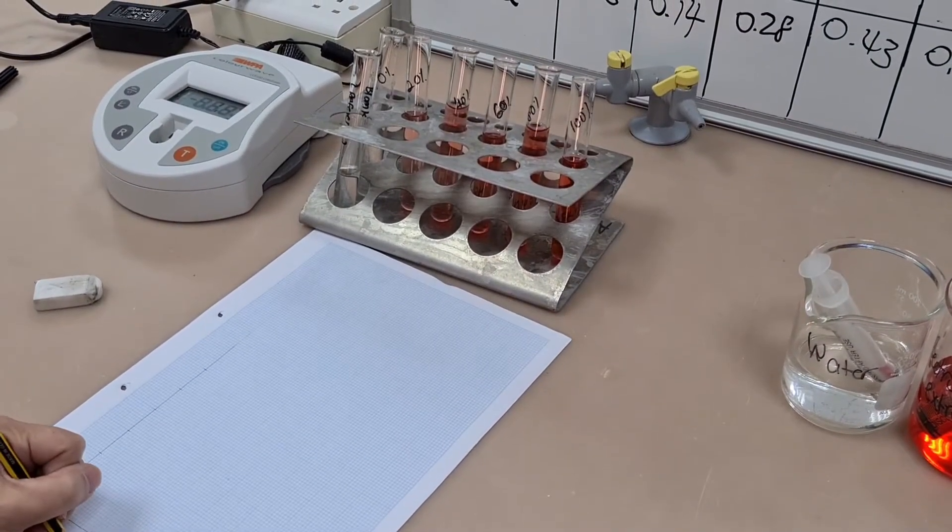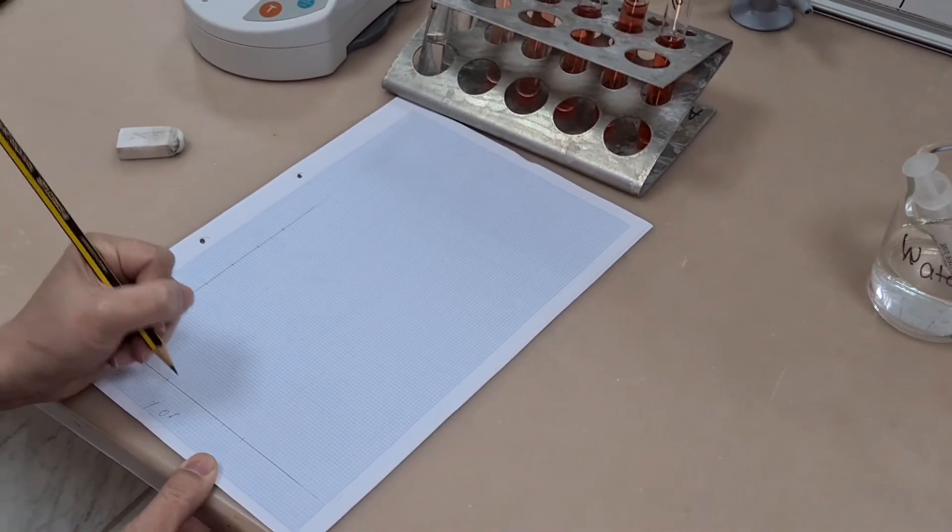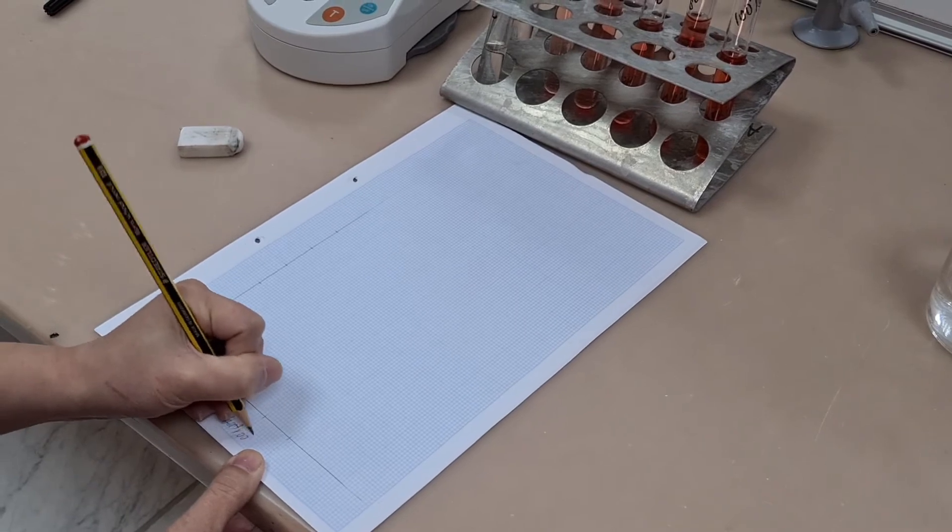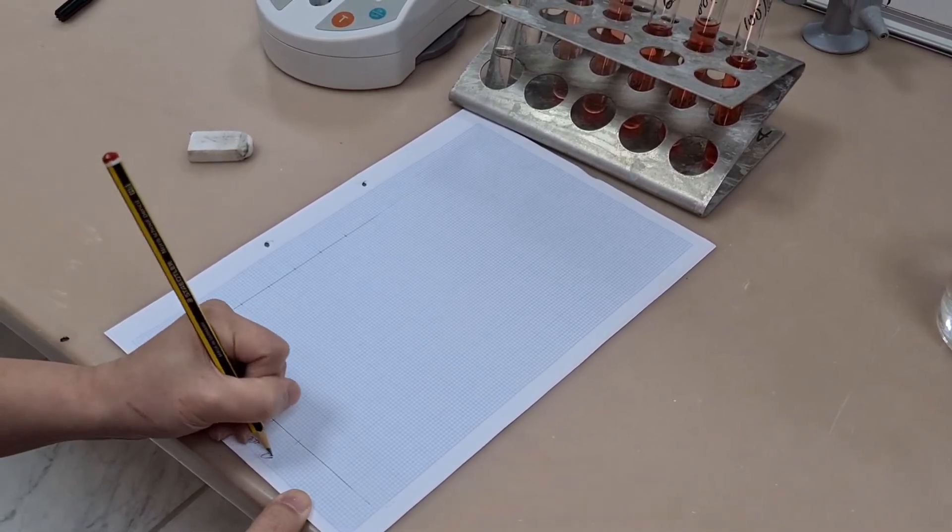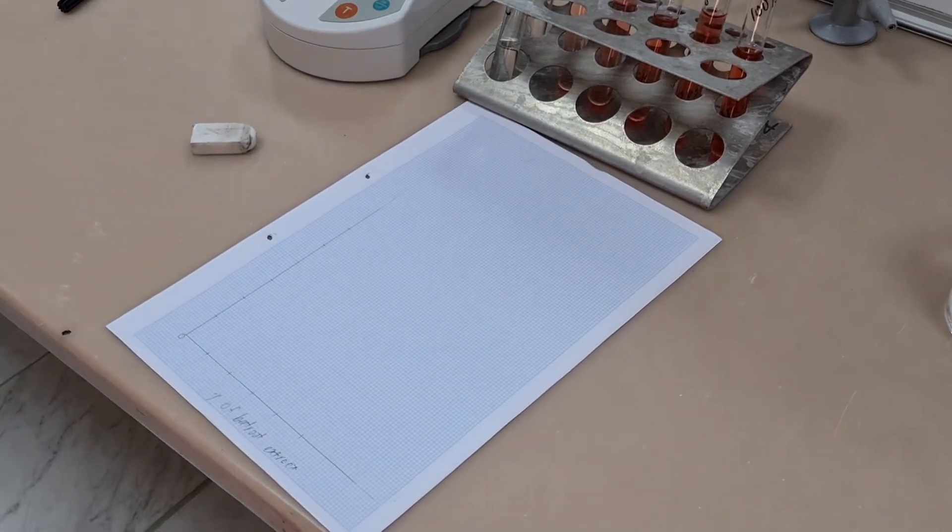So as we produce this graph let's just talk about the whole reason why you would do a calibration curve. You do a calibration curve with known concentrations and you plot it against either absorbance or transmittance. You produce a curve.